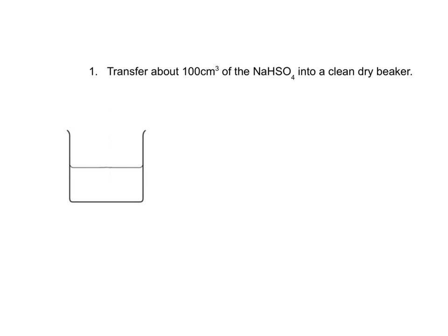Transfer about 100 centimetres cubed of the sodium hydrogen sulfate into a clean, dry beaker. This is the solution that we made up in Part A.